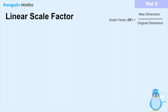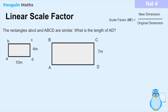To explain this in more detail, let's look at an example involving the linear scale factor. The question says rectangles abcd and ABCD are similar. What is the length of AD? The rectangle abcd uses lowercase letters for each corner, and ABCD uses uppercase letters. Length AD refers to the side between corners A and D on the larger rectangle — that's the side we need to find.